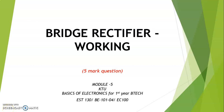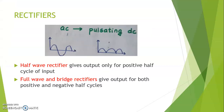In this video, we will be studying about the working of a bridge rectifier. As we are aware, rectifiers convert AC to pulsating DC. A half wave rectifier gives output only for the positive half cycle of the input, whereas full wave and bridge rectifiers give output for both positive as well as negative half cycles of the input.